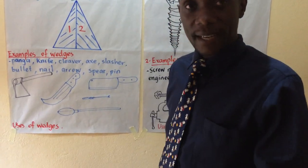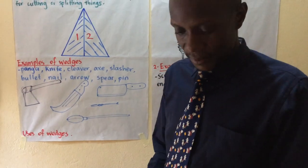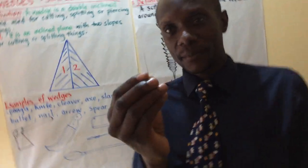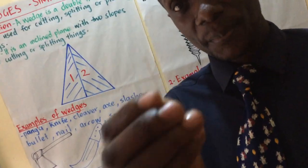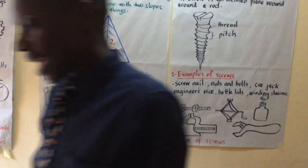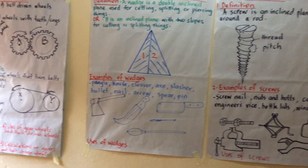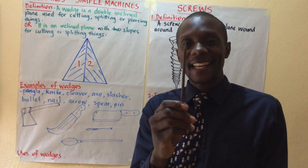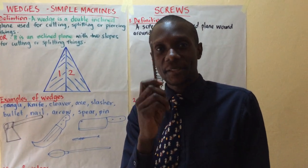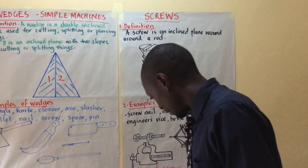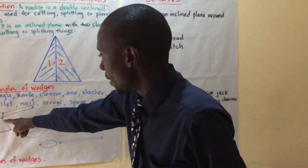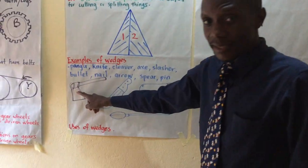I have a needle and a pin here. That pin is used for piercing things. I have also got a nail here — this nail is used for piercing things. And here is a picture of an axe.